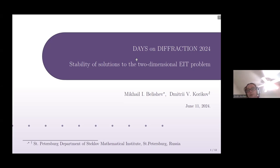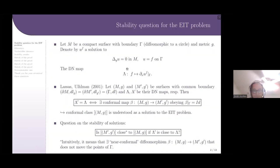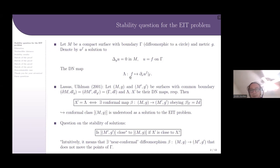These results were obtained in joint works with Michael Bereshev. Let M be a compact surface with boundary gamma and metric tensor g. We denote the harmonic function in M with trace f on the boundary gamma by u_f, and the operator that maps f to the normal derivative of u_f on gamma is called the Dirichlet-Neumann map.